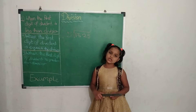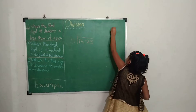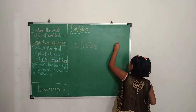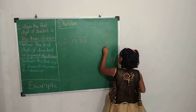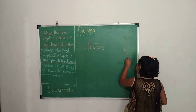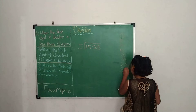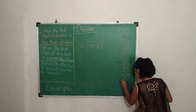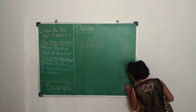We start the table from 0. So: 5 zeros are 0, 5 ones are 5, 5 twos are 10, 5 threes are 15, 5 fours are 20, 5 fives are 25, 5 sixes are 30, 5 sevens are 35, 5 eights are 40, 5 nines are 45, 5 tens are 50.